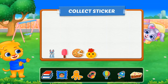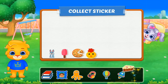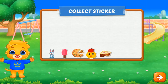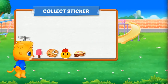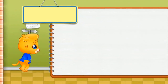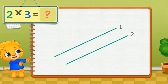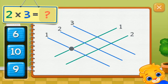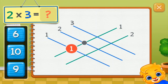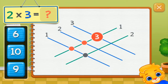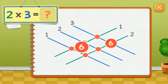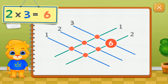Pick a sticker. Three times three equals one, two, three, four, five, six. Two times three equals six.